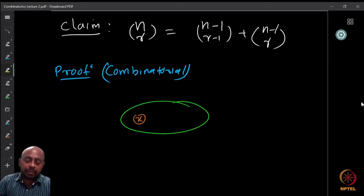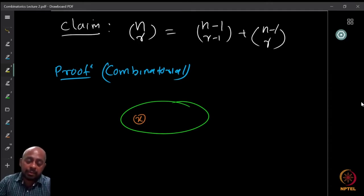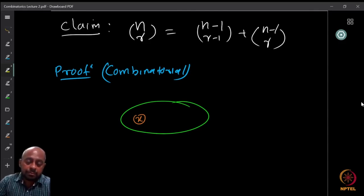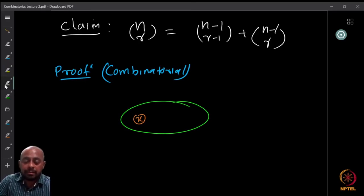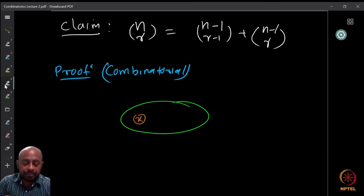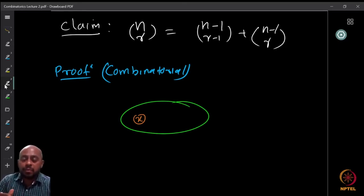Here is another claim: n choose r, where r is some positive integer less than n, equals n minus 1 choose r minus 1 plus n minus 1 choose r. We can always find an algebraic proof — write down these two expressions, cancel out the terms, and reduce it to n choose r. But again, that does not tell us anything new. So let us look at a combinatorial proof for the same thing.